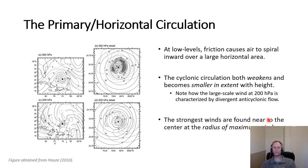The strongest winds are found near the center at what we call the radius of maximum winds. It's not right at the center but rather a short distance — on the order of 10 to 100 kilometers — away from the center. For the most intense tropical cyclones, this corresponds to the eye wall, which we'll define in more detail later in this video.